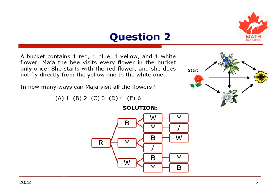Therefore, there are four different options for flight paths for Maya the bee, and therefore the solution is D.